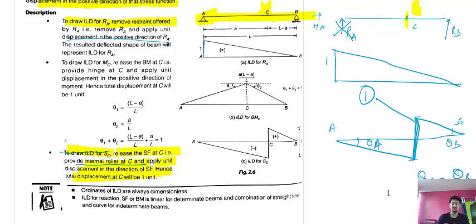While making the ILD for bending moment, you need to release the bending moment at the point in question. Provide a hinge at that point and apply the unit displacement in the positive direction of the moment. That displacement should be equal to a·b/L.